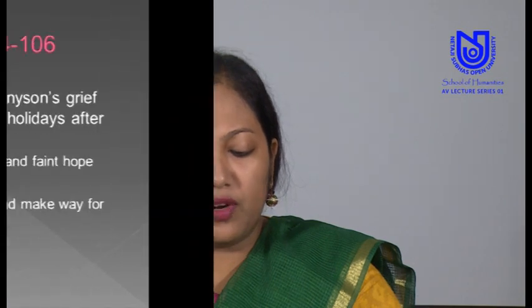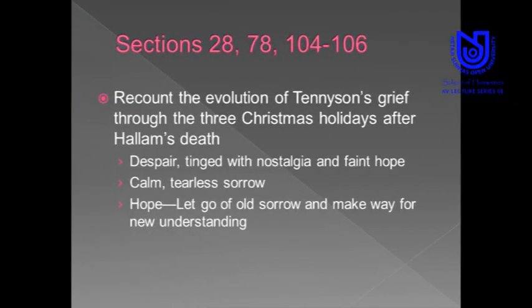Moreover, the poem contains no single unifying theme, and its ideas do not unfold in a particular linear order. The narrative of seventeen biographical years has been reduced to three fictional years. It is loosely organized around three Christmas sections — poems 28, 78, and 104 — each of which marks another year the poet must endure after the loss of Hallam, with the moods slightly changing, beginning with the rawness of grief and gradually maturing to a kind of understanding and habitual existing without the departed.